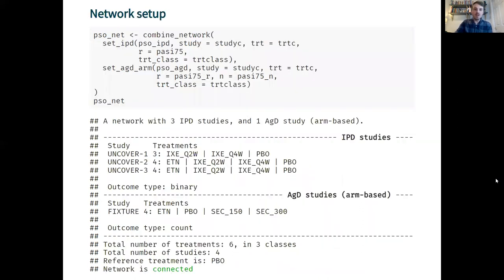Combining these together in a network, first we set the individual patient data and the aggregate data and then combine them together. You can see here I'm setting the columns of the data for the studies and the treatments and for the outcomes and also a treatment class and then I can print the details of the network below.